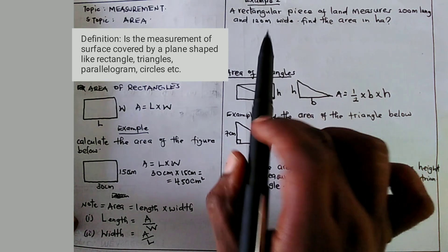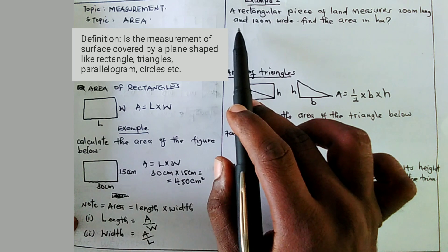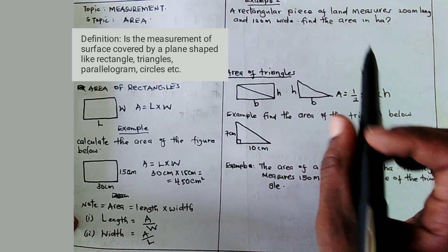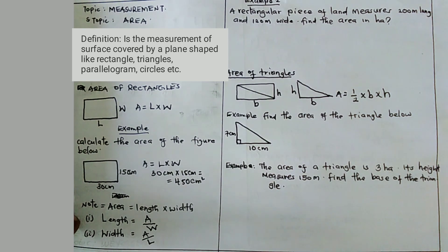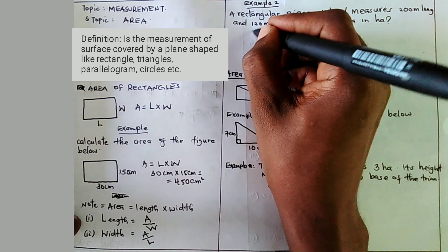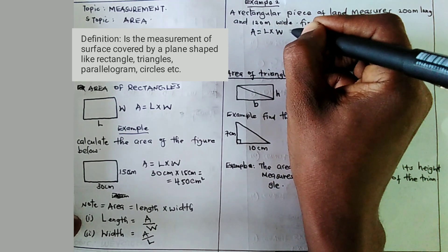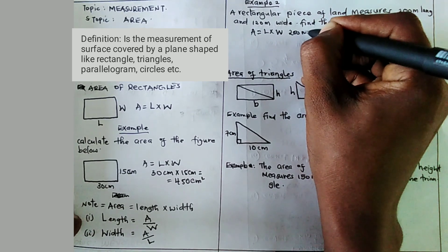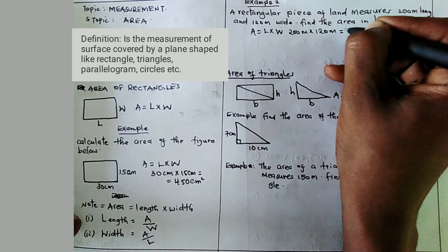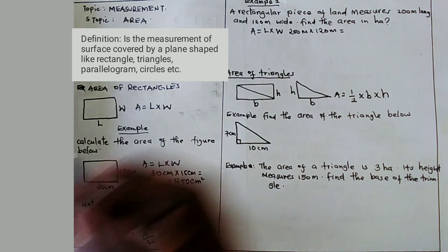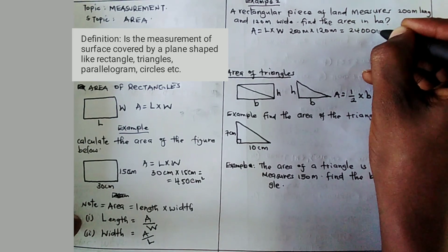Example 2: a rectangular piece of land measures 200 meters long and 120 meters wide. Find the area in hectares. First we find the area: area equals L times width, so 200 meters times 120 meters. Multiply that to get the area — that is 24,000 meter square.